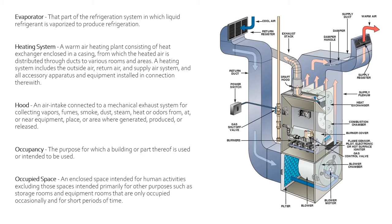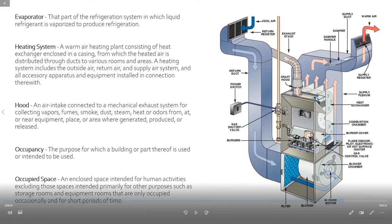Next we have hood. That is an air intake connected to a mechanical exhaust system for collecting vapors, fumes, smoke, dust, steam, heat, or odors from, at, or near equipment placed in areas where generated, produced, or released. The easiest example would be a hood or even a microwave that has a vent on it — that's considered a hood. Sometimes in houses there's a separate hood that's ducted outside that you can turn on to pull smoke and vapors from your stove to the outside. A lot of times microwaves just have a recycling-type system to run air through a filter and blow it out the front, although sometimes they are ducted outside as well.